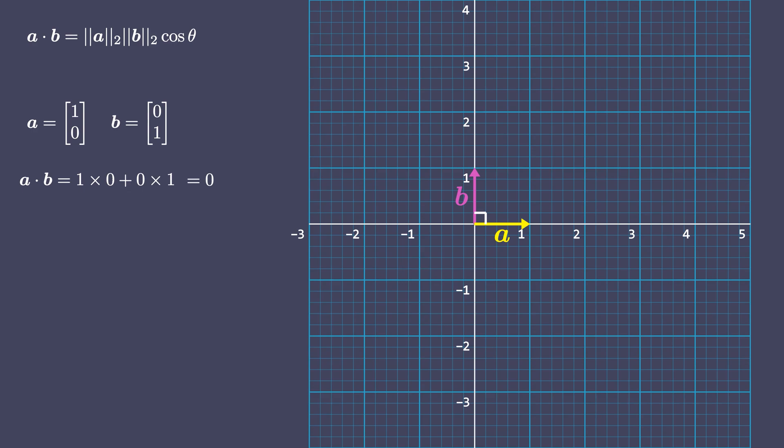No wonder, because the two axes are perpendicular to each other and cos 90 equals 0, so that validates our result.